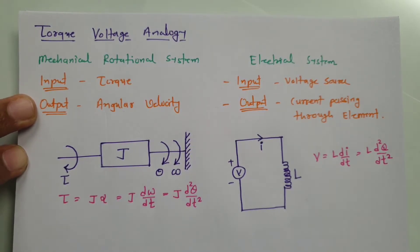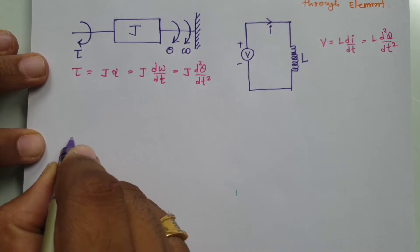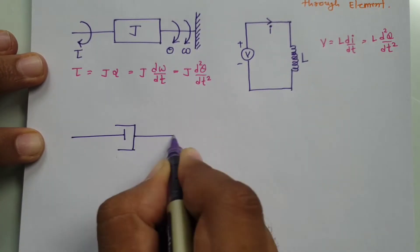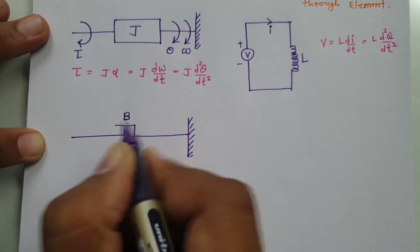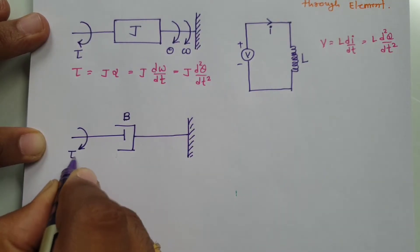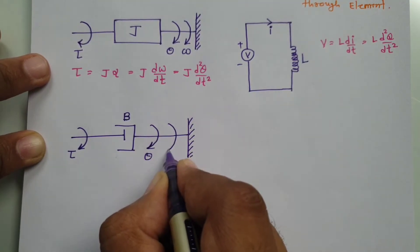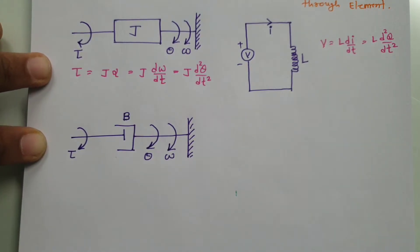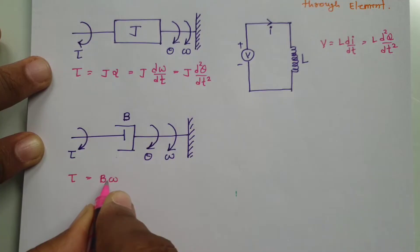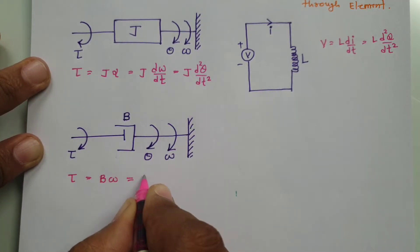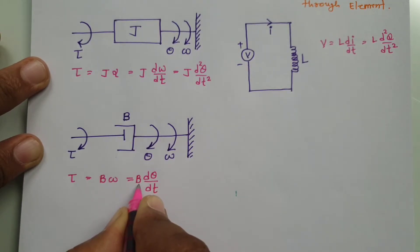The second element is a dashpot, or damper. If we have a mechanical rotational system with a dashpot having damping constant B, and we provide torque τ₂, we get angular displacement θ and angular velocity ω. The resultant torque is damping constant B times angular velocity ω, where ω is the rate of change of angular displacement with respect to time multiplied by damping constant B.